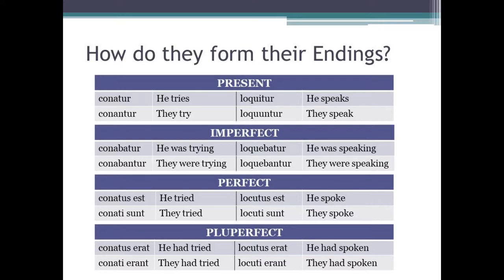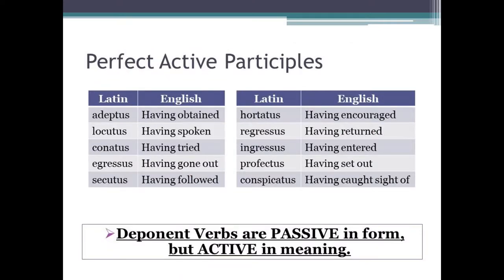And if you feel a bit patchy on perfect and pluperfect passive verbs, tap the top right for my video on stage 30. On with the video. And finally, on the topic of deponent verbs, are perfect active participles, which we had a look at in stage 22. Perfect active participles are formed from deponent verbs — you'll see on screen now a list of the PAPs, and you may wish to pause to have a look. Just to consolidate: deponent verbs are passive in form but active in meaning.